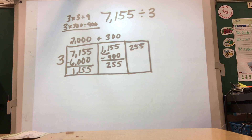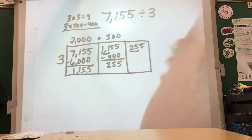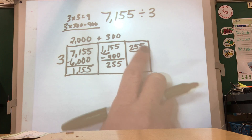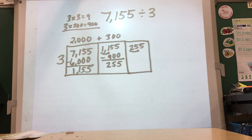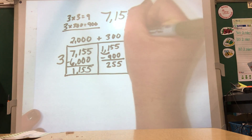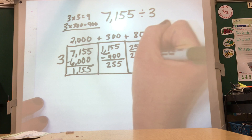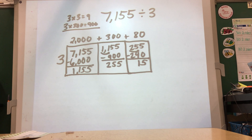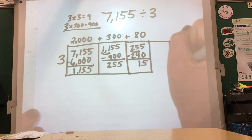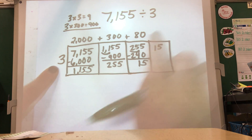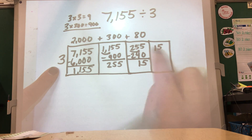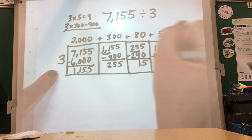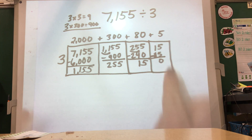I have 255 left. Looking at the first two digits, I think what multiple of three is close to 25 tens: 3, 6, 9, 12, 15, 18, 21, 24 — eight times three is 24, so 80 times 3 is 240. I now only have 15 left, getting very close to zero. I need one more box. Three times what equals 15? Three times 5 is 15 — and I'm down to zero.